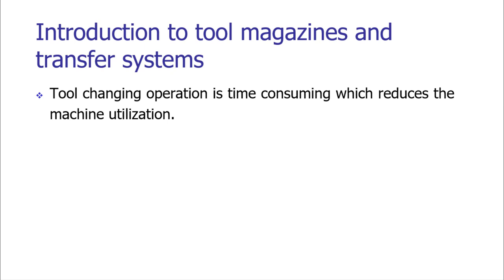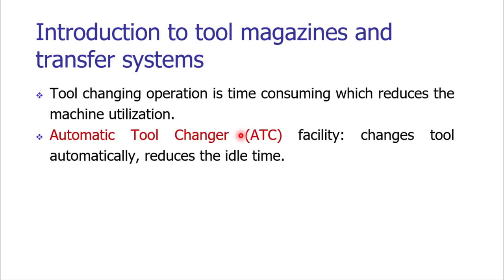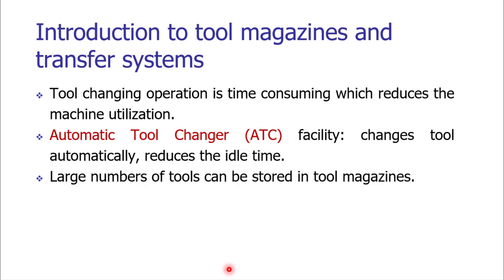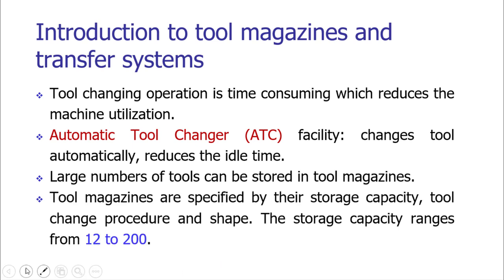It is essential for us to understand the concepts of tool magazines and tool transfer systems. A facility providing tool changing in automation is called an automatic tool changer. In magazines, we can store many tools — typically ranging from 12 to 50, and sometimes more than 100 or even around 200. Tool magazines are generally specified by their storage capacity, the procedure to change the tool, and the kinds of tool shapes they can accommodate.